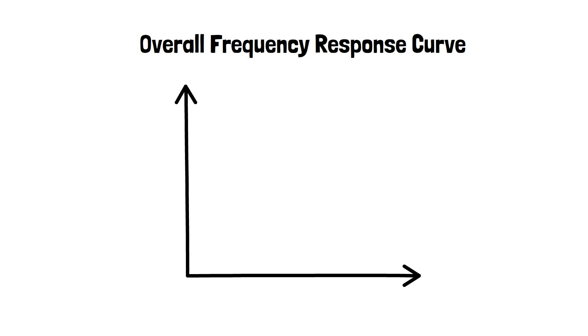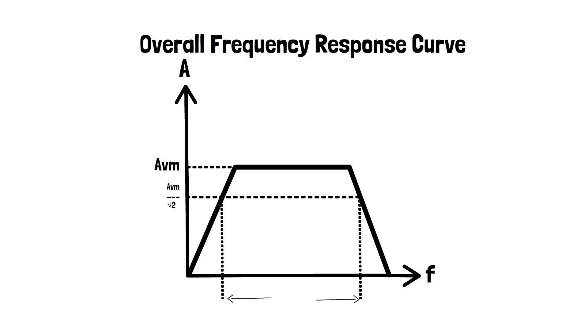From mid, low and high frequency graphs we get the overall frequency response as shown. The plot of gain versus frequency is called as frequency response. The frequency at which the gain is 1 by root 2 times the mid value is called as cutoff frequency. There are two such cutoff frequencies, higher and lower frequencies. The bandwidth between these two frequencies is called as bandwidth. That is bandwidth equal to FH minus FL.